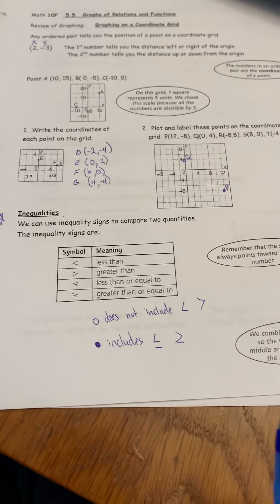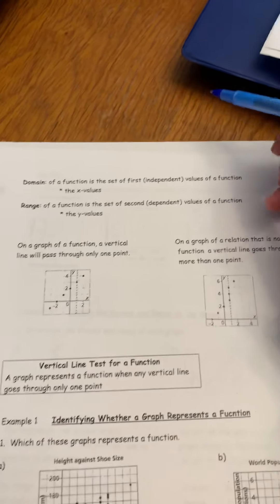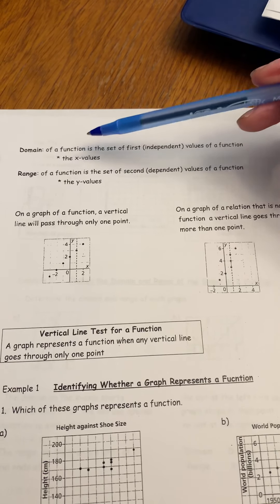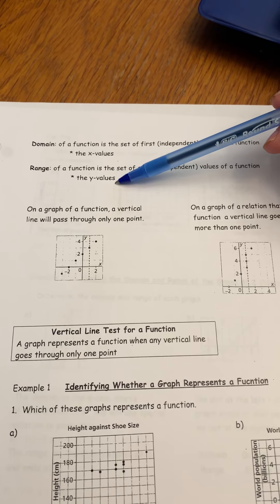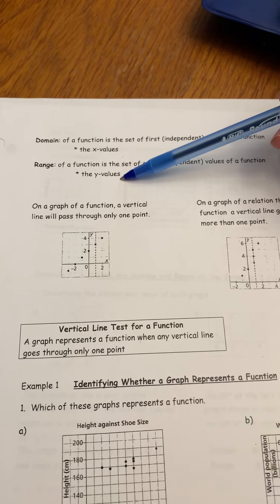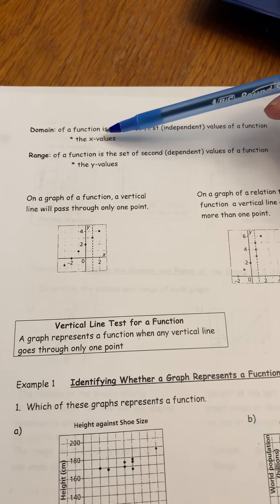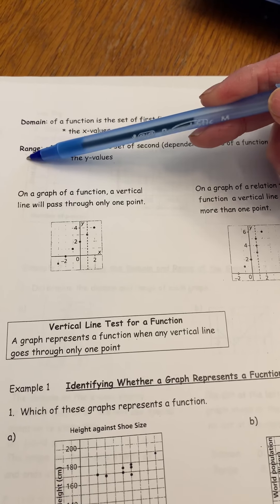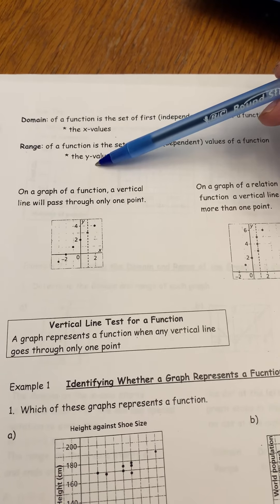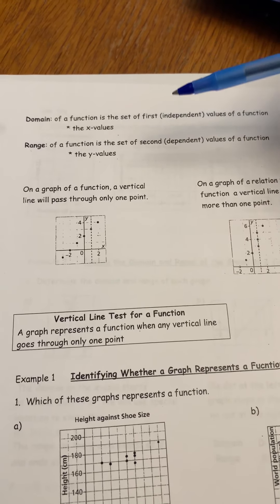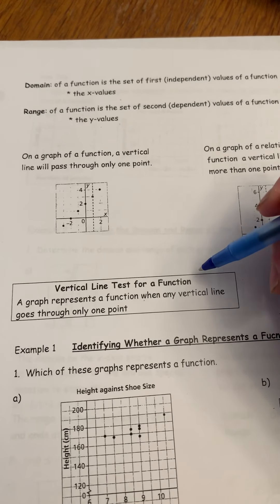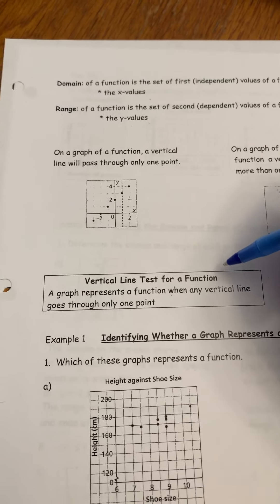Now we're wrapping this all together. Domain is the x-values and range is the y-values. Here's a helpful trick: domain comes first in the alphabet, range is later — and x comes before y in the alphabet. So that's a little memory aid for when you're first learning these.